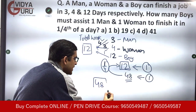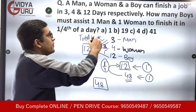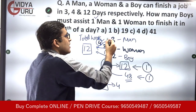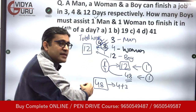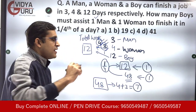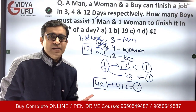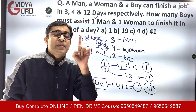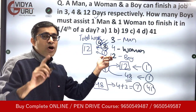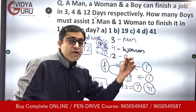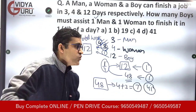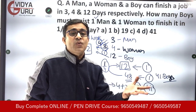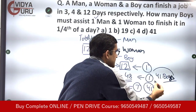48 units need to be performed in one day. We have one man who does 4 units per day and one woman who does 3 units per day — together they contribute 7 units. So 41 units are still left. These 41 units will have to be performed by boys. One boy does 1 unit per day, so to perform the remaining 41 units, you will require 41 boys. The answer is 41 boys.